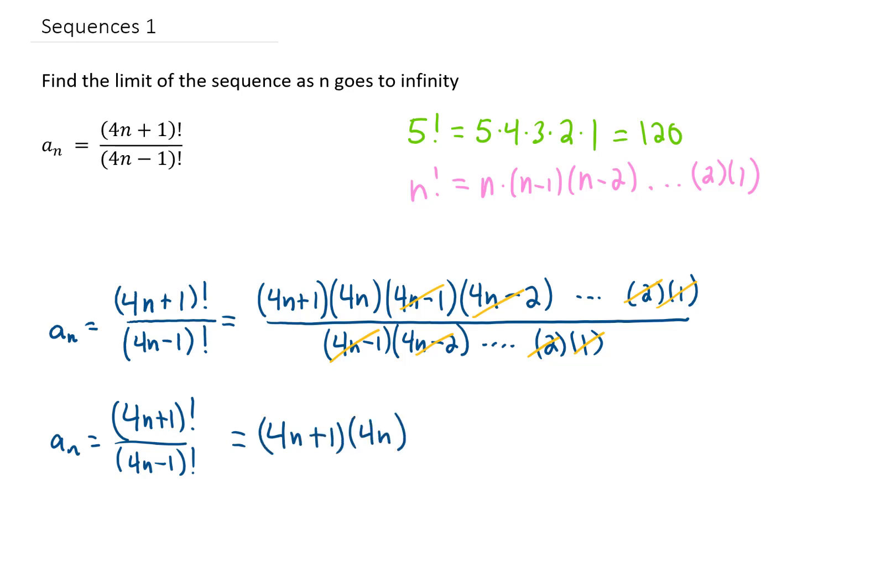Now if we consider what happens as n goes to infinity, we no longer have infinity over infinity. We have infinity times infinity, so this sequence goes to infinity as n goes to infinity. That is not an indeterminate form anymore, the answer is just infinity.